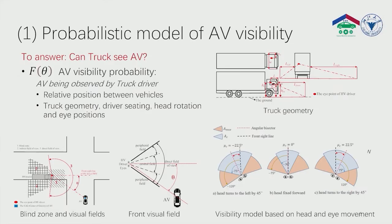To answer the question of whether the truck can see AV, we divide the truck driver's visual field into three areas: blind zone, indirect field of view, and front direct field of view. The AV visibility probability f-theta is then calculated using the truck geometry and the relative position between AV and truck.